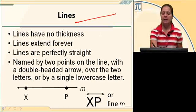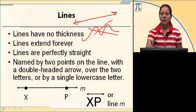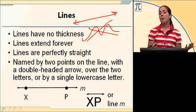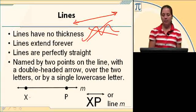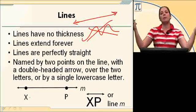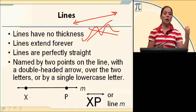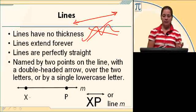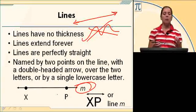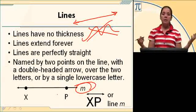Lines don't have any thickness. They're going to extend in two directions forever. Lines are perfectly straight, so if it's curved, it's not a line. When you name a line, you name it with two letters — two capital points, in this case X and P — and you put a double arrow over the top. The double arrow shows the reader that it's going in both directions forever. It doesn't matter if you name this XP or PX. You can write the word line XP or line PX, or you can name it with a lowercase letter, in this case line m. A line goes in two directions forever — no thickness, perfectly straight.